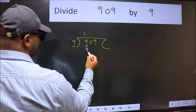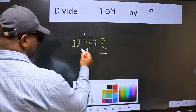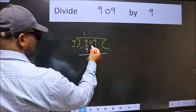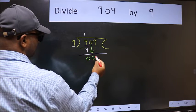9 once 9. Now we should subtract. We get 0. After this bring down the beside number. So 0 down.